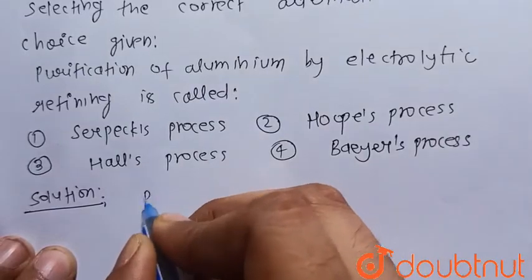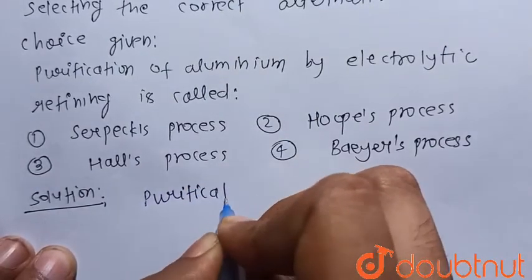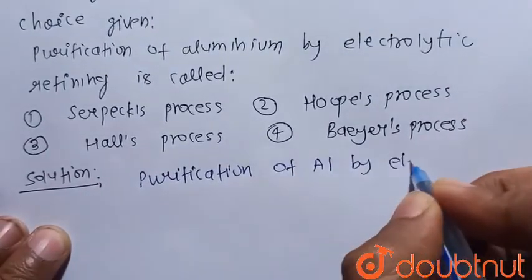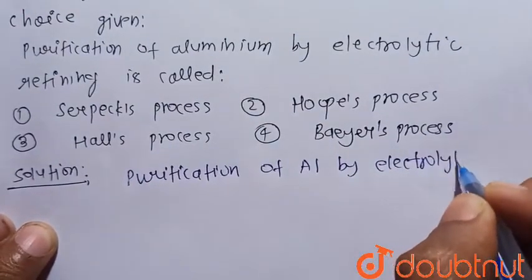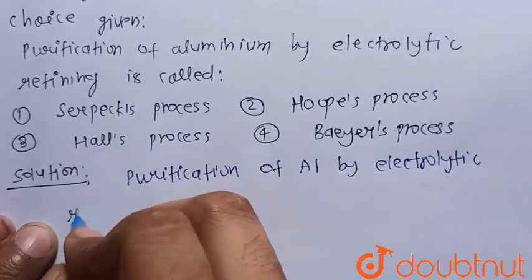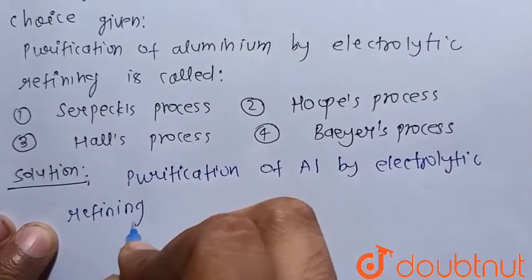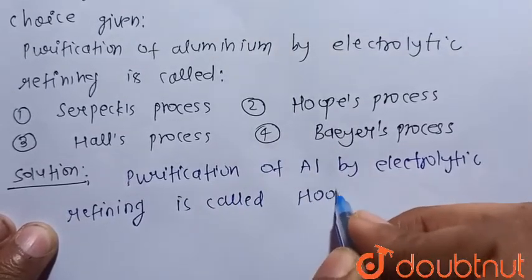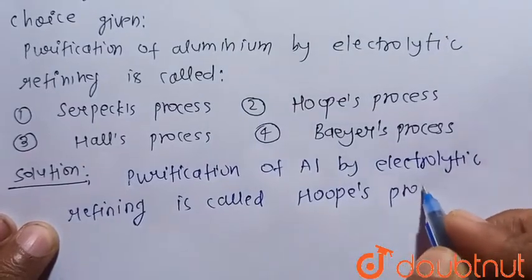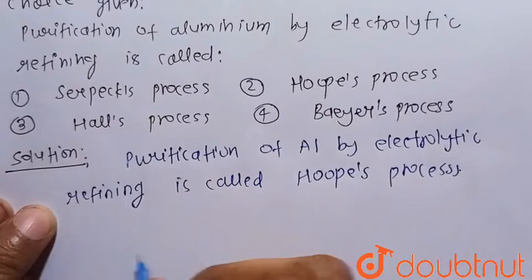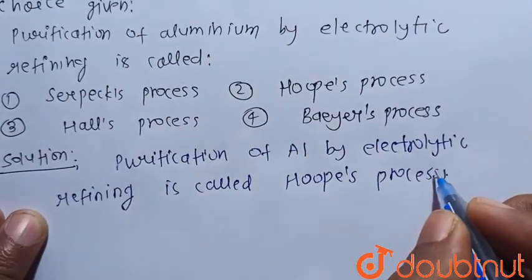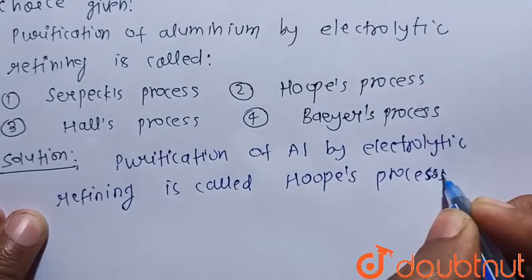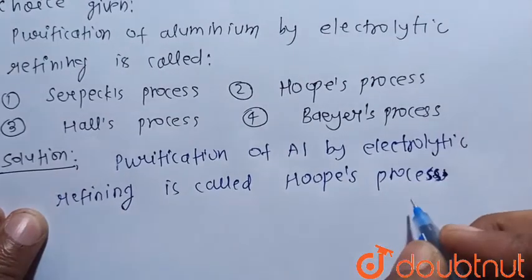We know that purification of aluminium by electrolytic refining is called the Hoops process.